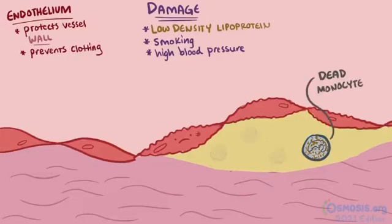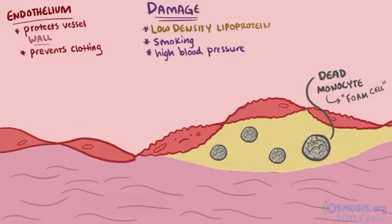After it dies, it deposits itself under the damaged endothelium, so now we have a dead macrophage filled with low density lipoproteins stuck in the damaged endothelium as well. These dead macrophages are called foam cells, because some guy a while back looked at these things under a microscope and thought they looked like foam on the beach — hence the name.